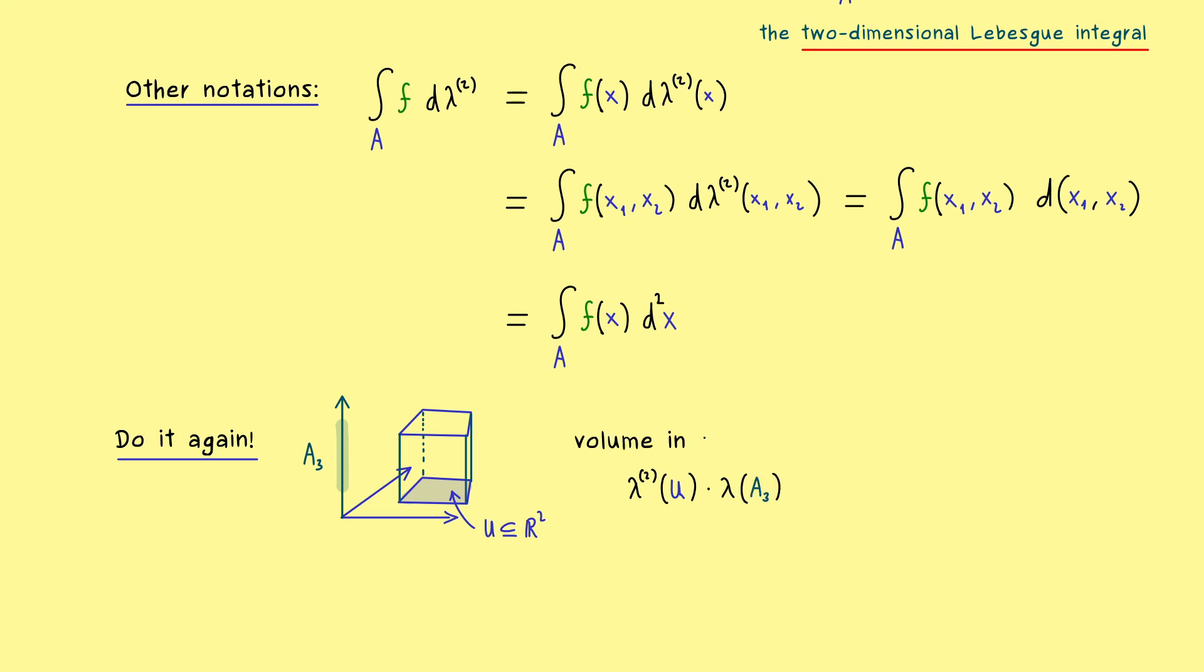Then the volume here in R3 would be Lambda2 of U times Lambda of A3. So there we have it. We see that the starting point is exactly the same as before. So we can do the same product measure construction we know from measure theory to get Lambda3.